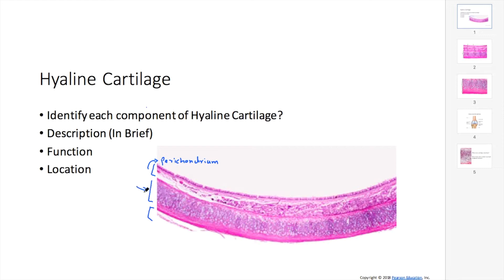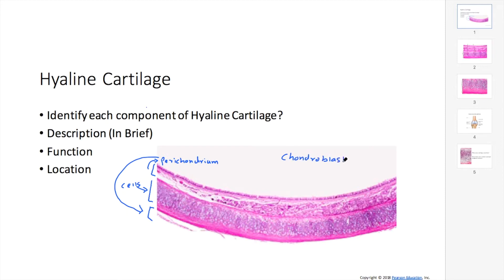The perichondrium is the area where you can find those cells, and it surrounds the cartilage. Externally, the cartilage is covered by perichondrium. Inside, you can see the cells called chondrocytes. There are two types of cells: chondroblasts and chondrocytes.